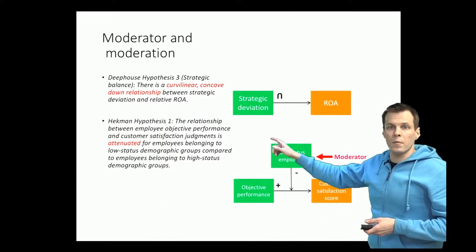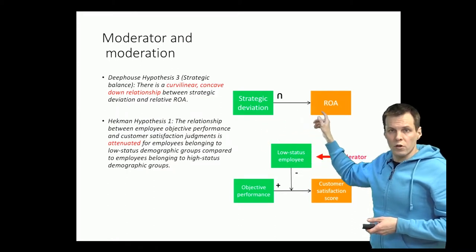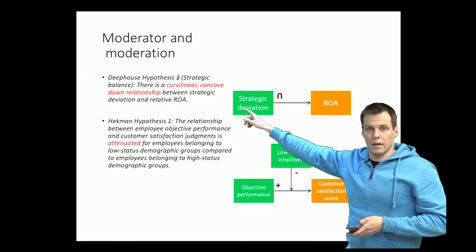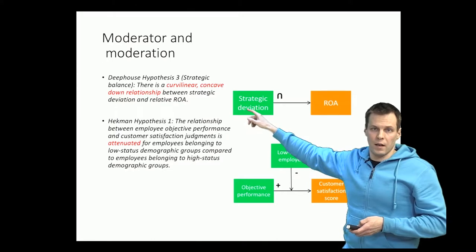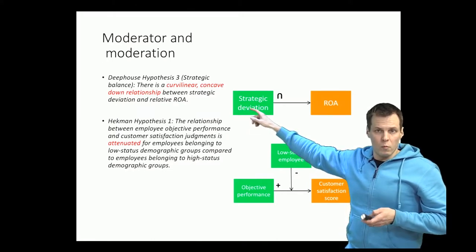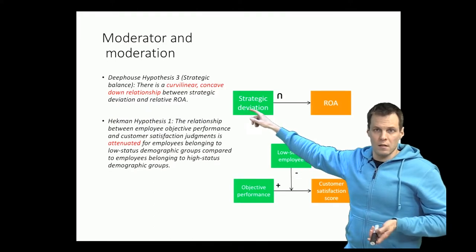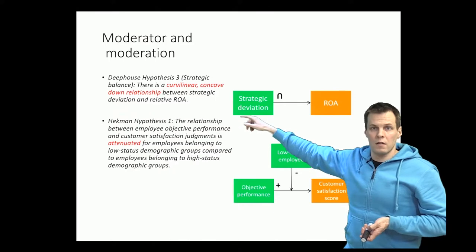Then we also have this another type of interaction effect called a u-shape effect. Deep House says that there's a curvilinear concave down relationship, which basically means that the effect of strategy deviation on ROA is first positive, but once you get too deviant then it starts to go down so it's negative. So it's positive first, then it turns negative. It looks like a u that is drawn upside down.